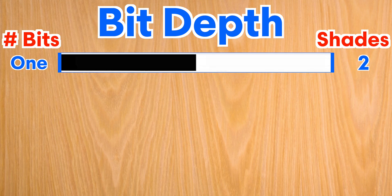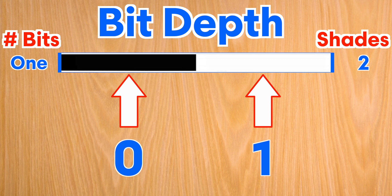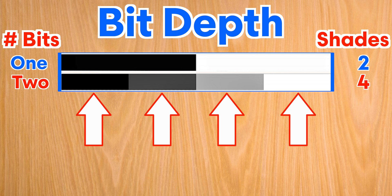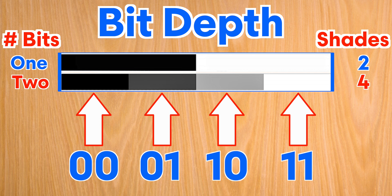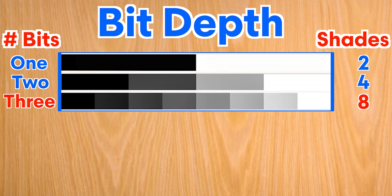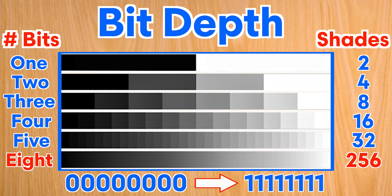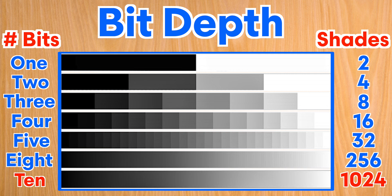So if we only had one bit of information, all you'd be able to see is black or white because you only have the option of a 0 or 1. But each time you add another bit, you get double the options of shades between black and white. So with two bits, you'd then have 00, 01, 10, and 11. With three bits, you'd double those shades again. So by the time we get to eight bits, which is the standard on most cameras, you have 256 options from combinations between eight zeros to eight ones. And once you make the jump from eight bit to ten bit, you have 1024 different shades, which gives a much smoother change between various shades.